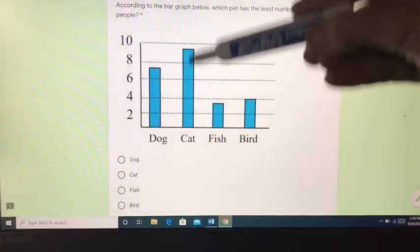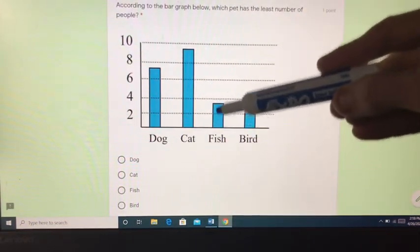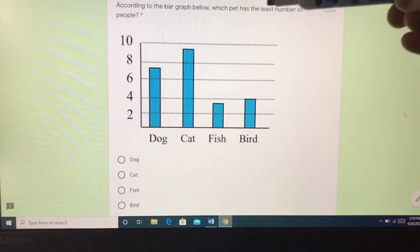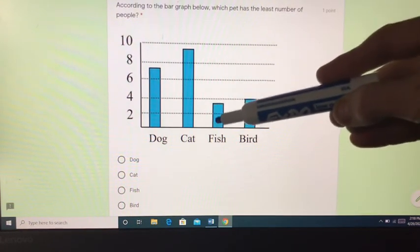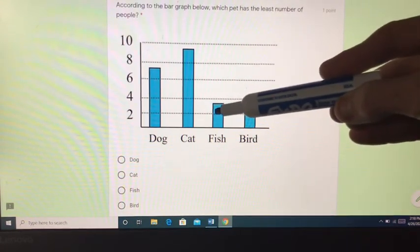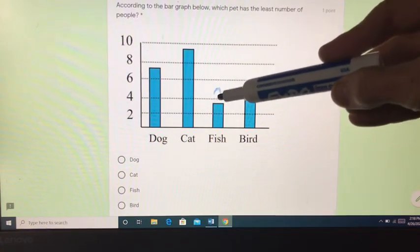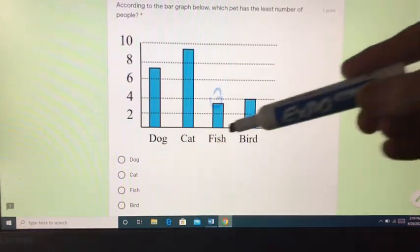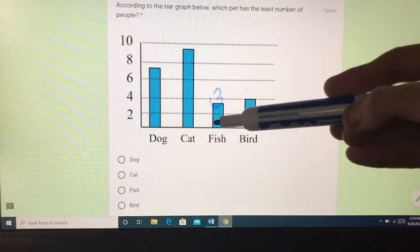When I look at my bars here, my lowest or smallest or least would be fish, because fish comes between two and four, which means there's three people that have picked fish.